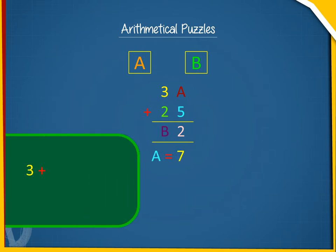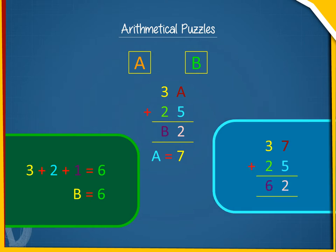Further, 3 plus 2 plus 1 carryover equals 6. So B is 6. The solution is 37 plus 25 gives 62.